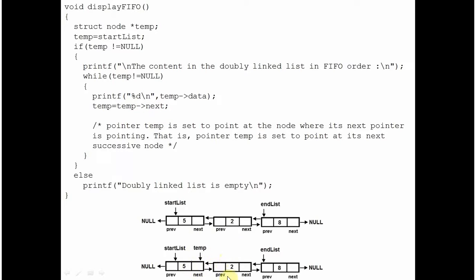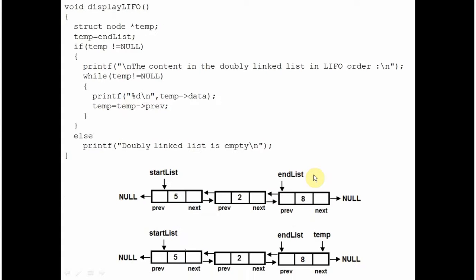temp is set to point where the next member is pointing — temp moves to node 2. The while loop checks: is temp not null? Yes. It prints the data member of temp — 2 is displayed. temp is set to point at its next node and moves to node 8. Is temp not null? Definitely not null. It displays the data member — 8 is displayed. temp is then set to point at its next node, which is null. Since temp is null the while loop exits. This displays the elements of the double linked list in FIFO order.